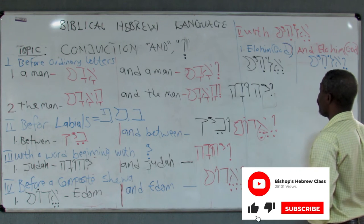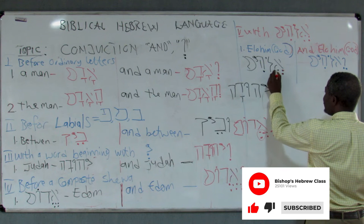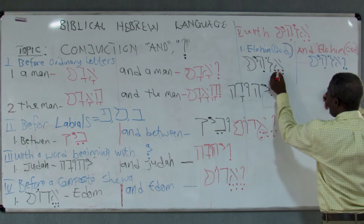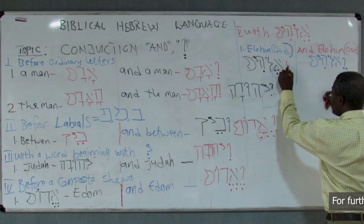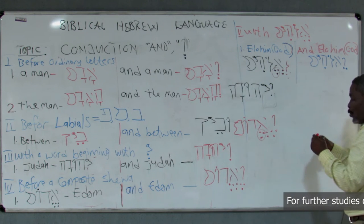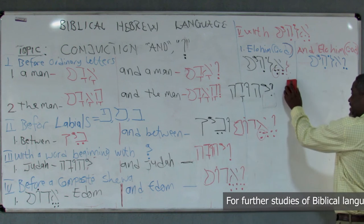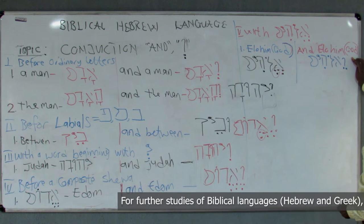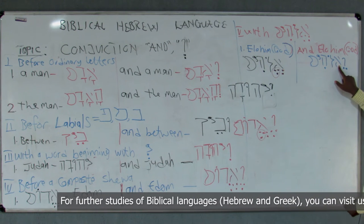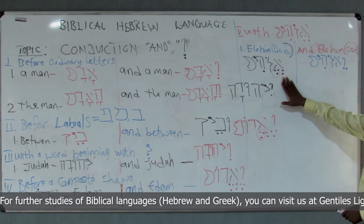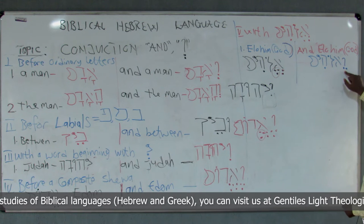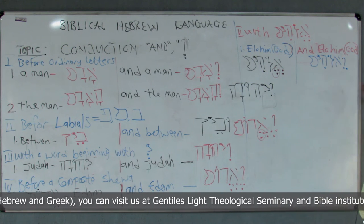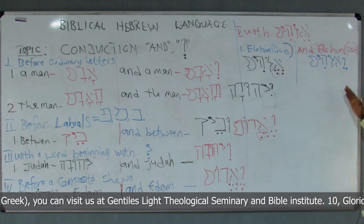Now, another divergent case is the word 'Elohim.' Elohim also has a composite shewa hatef segol at the beginning. Naturally you might carry the corresponding vowel, just as we did with Edom. But Elohim does not follow that rule — it is an exception. Instead, the aleph loses its consonantal character and its vowels fall away, and the conjunction carries the long vowel sere, giving us 'welohim,' meaning 'and God.'